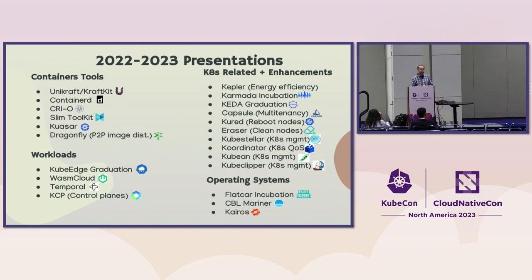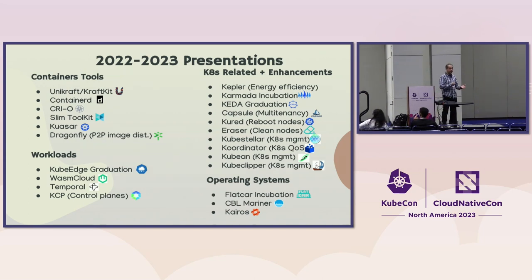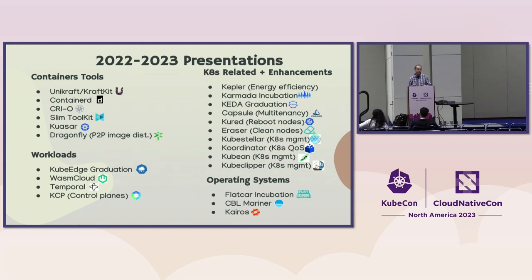Here are some examples of presentations we've had this year and last year. We have container tools — projects like Unikraft and Container D presented, among others. In terms of workloads, we had the Kube Edge graduation presentation, as that project is pretty mature. Other presentation areas include Kubernetes-related projects that enhance the Kubernetes ecosystem like Kata, Eraser, Kube Stellar, and so forth. We also had quite a few presentations on operating systems, which will be more developed within the Special Purpose Operating System working group.